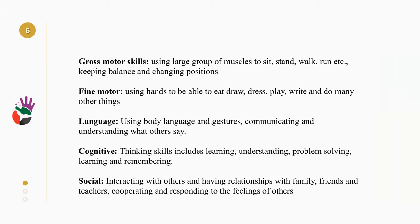Gross motor skill is using large groups of muscles to sit, stand, walk, run, keep balance, and change position — important in all daily life skills. Fine motor skill is using the hands to eat, draw, dress, play, and write. Language is using body language and gestures, communicating and understanding what others say. Cognitive thinking skills include learning, understanding, problem solving, and remembering. Social skills involve interacting with others and having relationships with family, friends, and teachers, cooperating and responding to the feelings of others. Occupational therapy can work on all of these skills to improve them and support proper development so the child can be independent.